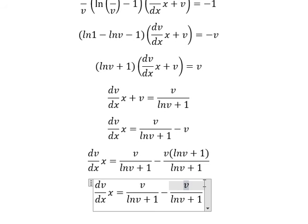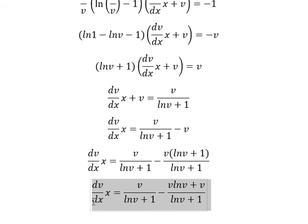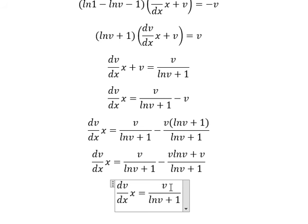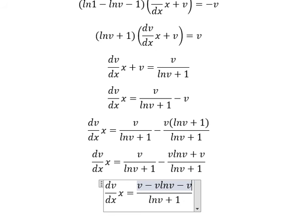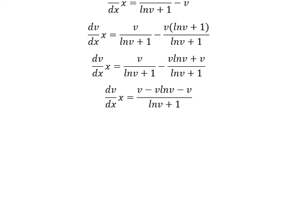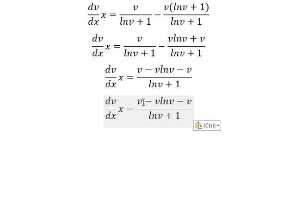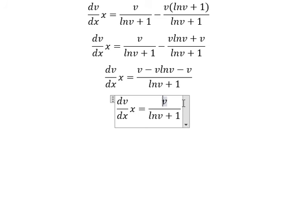We have v·LN v plus v. Now we combine two fractions together, giving us negative v·LN v minus v. Then v minus v cancels, so we are left with only negative v·LN v.